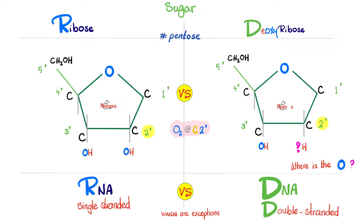There is another difference between DNA and RNA. DNA is double stranded. RNA is single stranded. Viruses offer exceptions, but that's a story for another time. A third difference between DNA and RNA. DNA has thymine. RNA has uracil. Both thymine and uracil are pyrimidines.